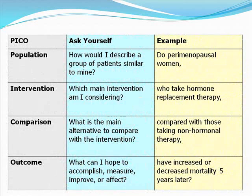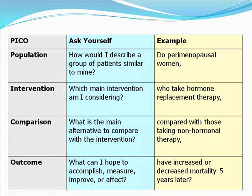Let's work through an example using this PICO matrix. To identify your population, ask yourself: how would I describe my patient? For example, perimenopausal women. What is the main intervention I am considering? In this case, we are interested in hormone replacement therapy. Our comparison group are those taking non-hormonal therapy.